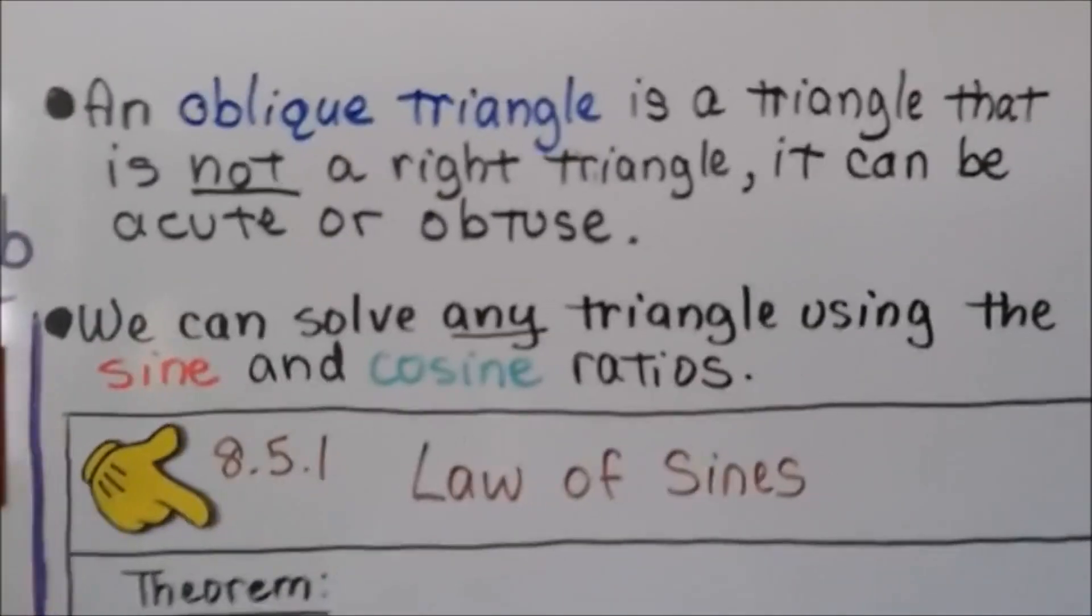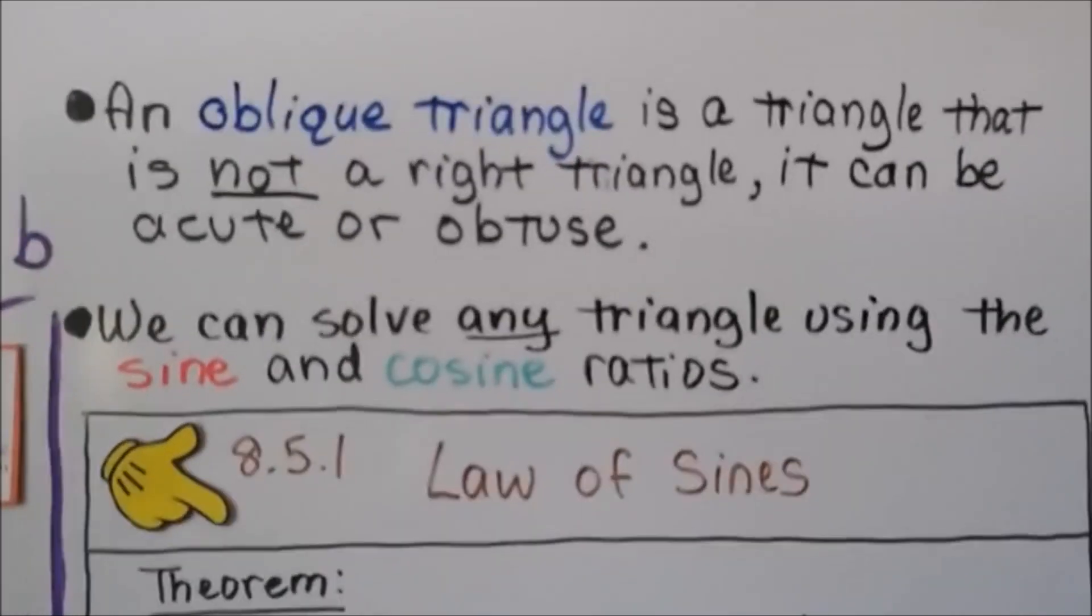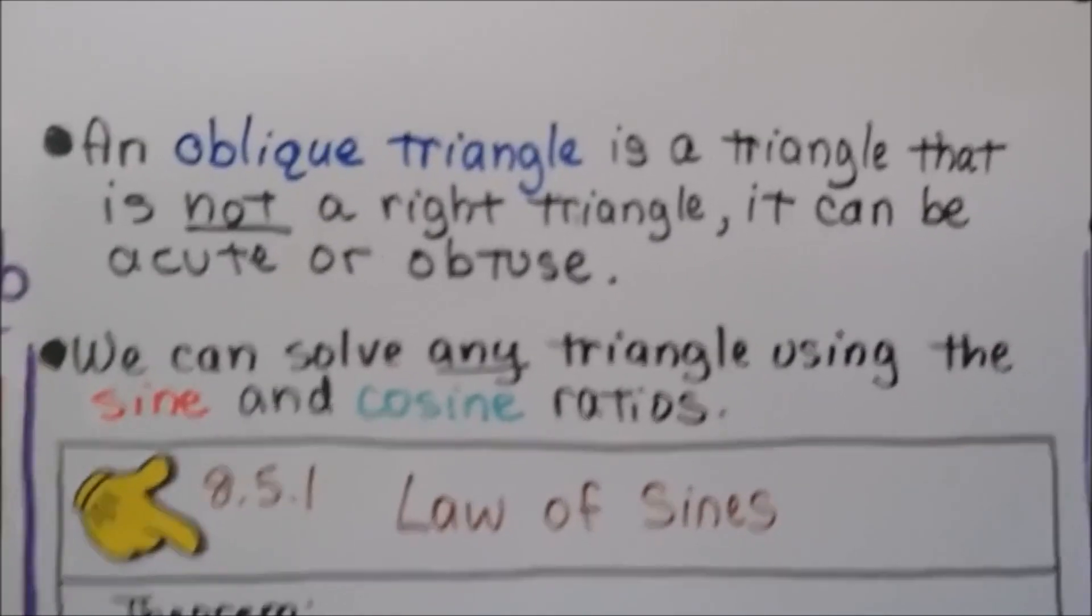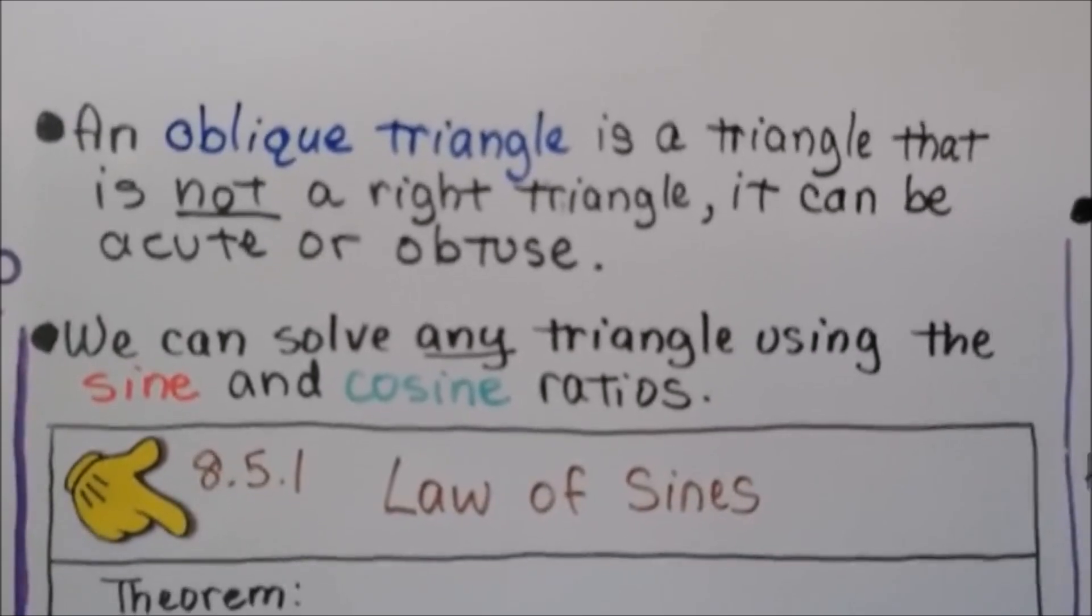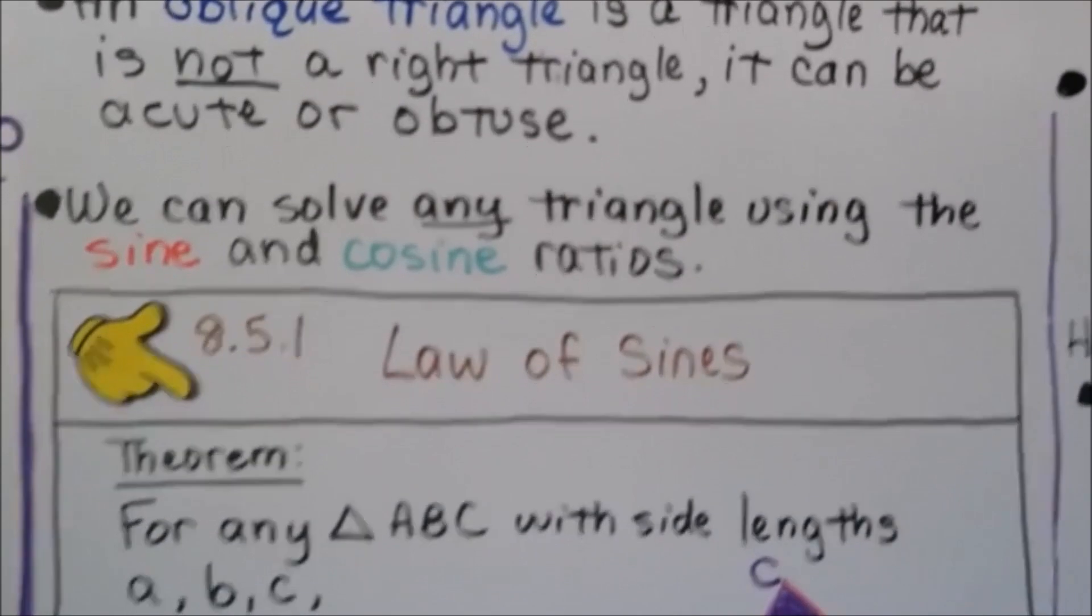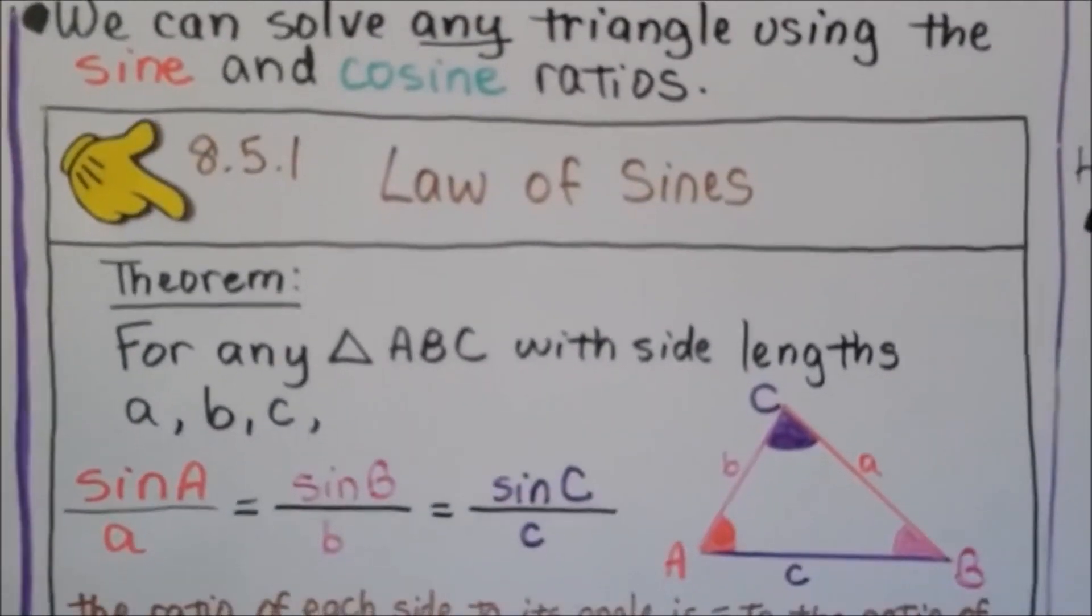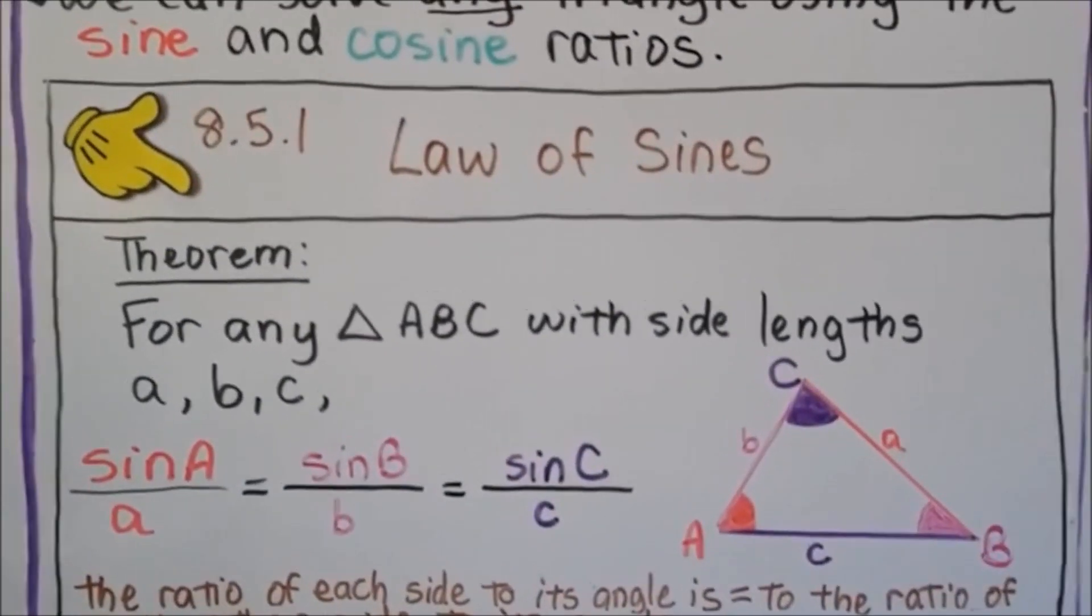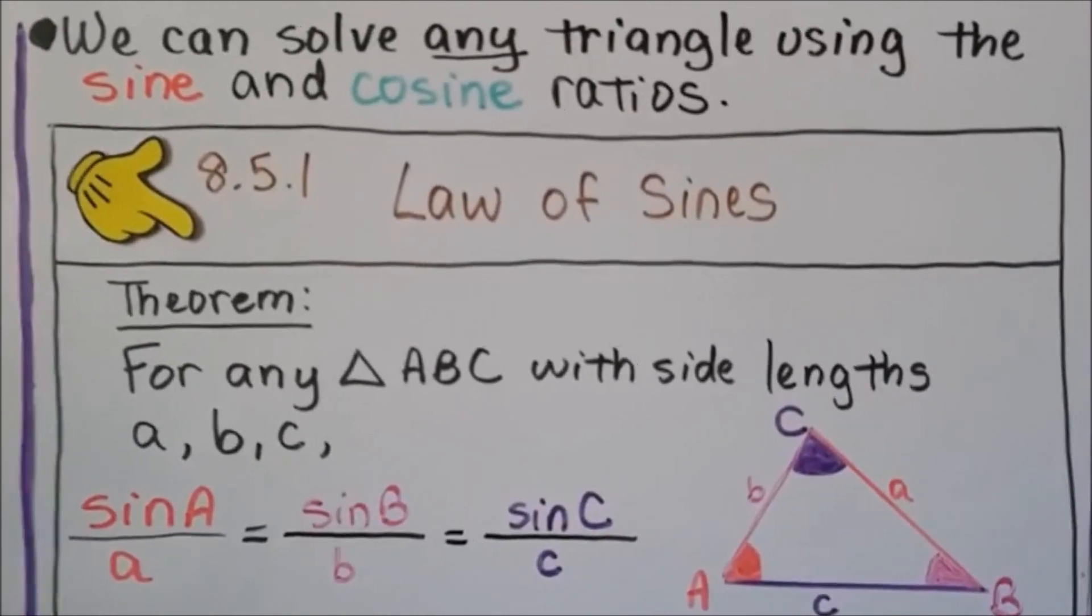Triangles may not always be called obtuse. You might hear them called oblique triangles. An oblique triangle is a triangle that is not a right triangle. It can be acute or obtuse. We can solve any triangle using the sine and cosine ratios. Here's the law of sines. We're going to do the law of cosines in the next video, 8.5c.